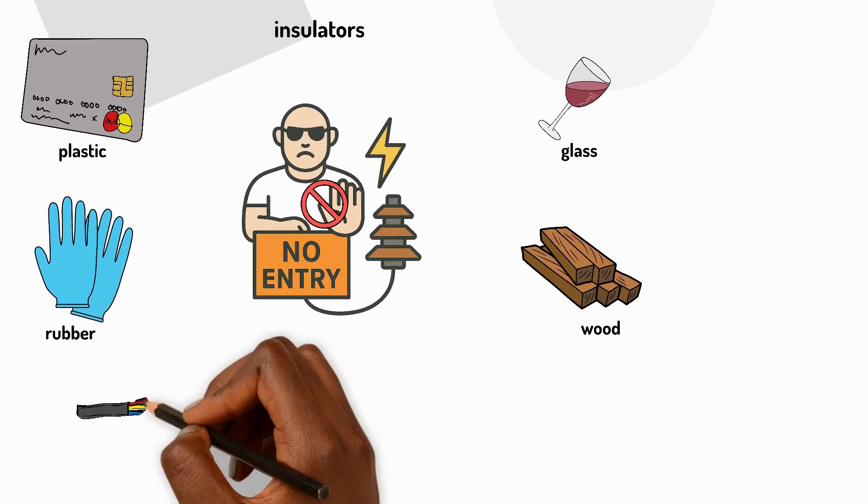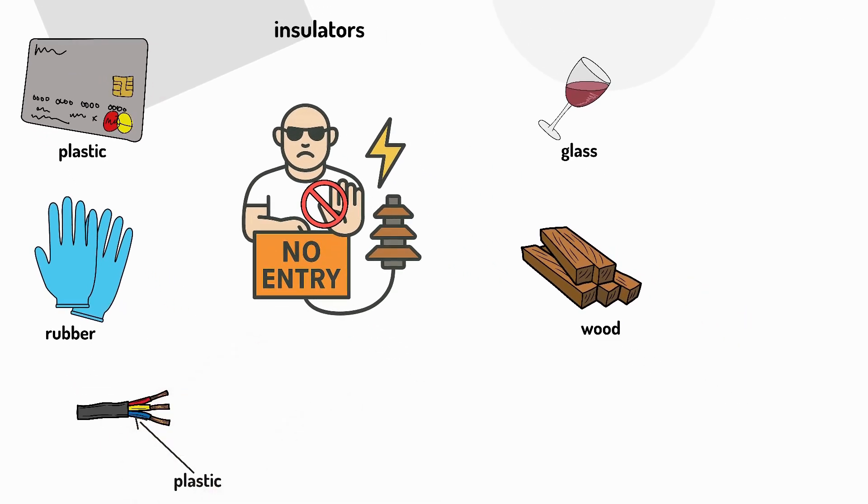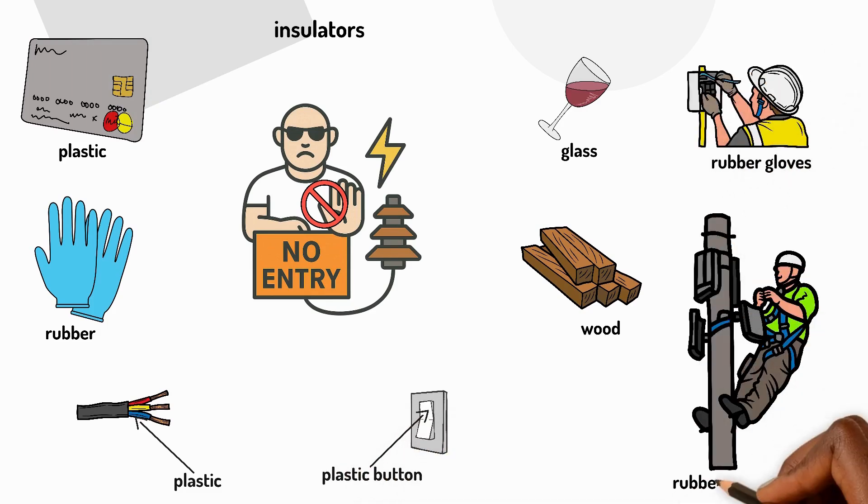That's why the outside of wires is covered in plastic and why light switches have plastic buttons. Electricians sometimes wear rubber gloves and rubber-soled shoes because rubber is such a good insulator. It helps keep them safe when working with electricity.